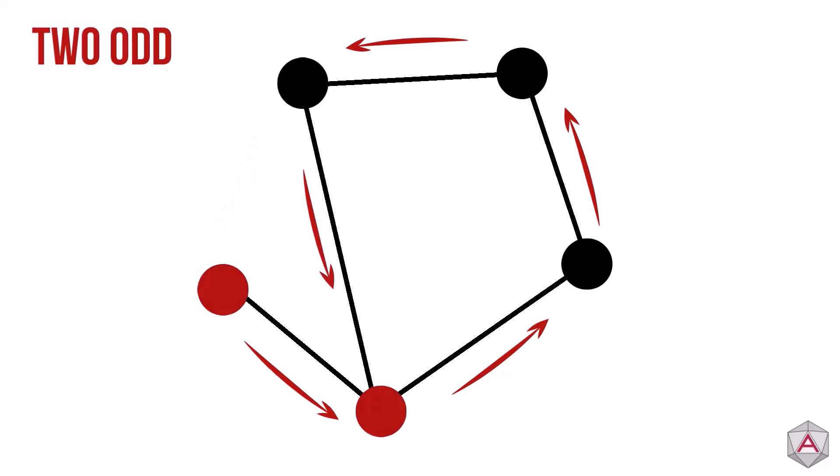If we take a graph with two odd edges, we can still find a path but only if we start and end on an odd node.